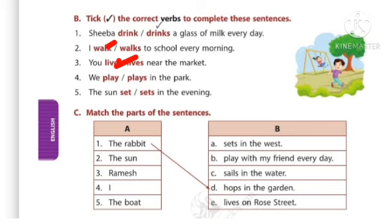Fifth: the sun set or sets in the evening? It's a fact — a natural truth — so we need to add S with the verb. The answer is: the sun sets in the evening. So the answers are: Sheba drinks, I walk, you live, we play, the sun sets.